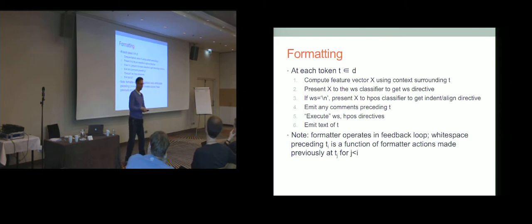So formatting is quite simple. For every token in a file, we are going to compute the feature vector. Now, instead of adding it to the list of exemplars, we compute these feature vectors, like with training, but we present it to the classifier and say, for this context, what do you predict we should inject for white space? And it will give us a WS decision, a directive. If that directive includes a new line, then we present the feature vector to the classifier to get a horizontal position. Then we can emit everything. We shove comments out the door. We execute the directives. And then finally, we emit the token text. And then we move on to the next token.